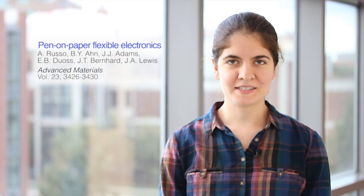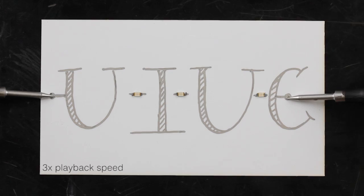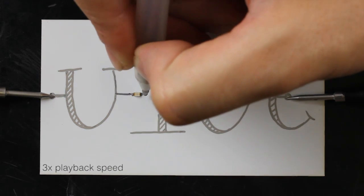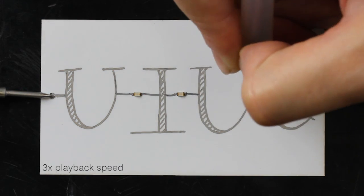We recently developed a conductive silver ink for use in commercial rollerball pens. We're using these pens to directly draw circuits on flexible substrates, like paper.